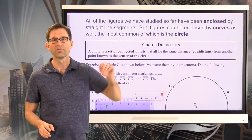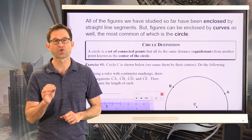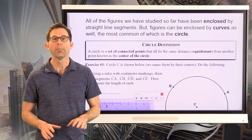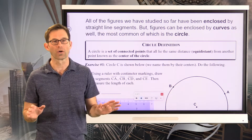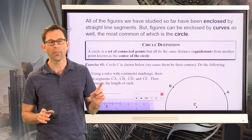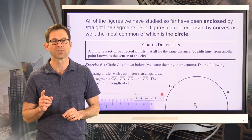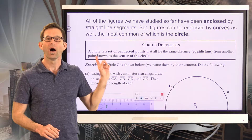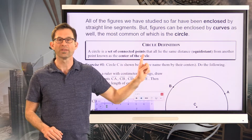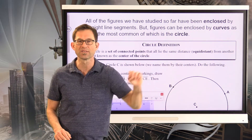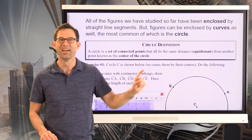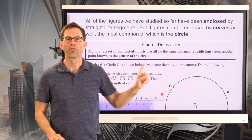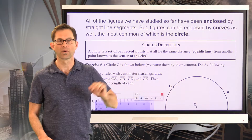Now all the figures that we've studied so far have been enclosed by straight line segments — think about triangles, rectangles, and trapezoids. But figures can be enclosed by curves as well, the most common of which is a circle. So what is the true definition of a circle? A circle is a set of connected points that all lie the same distance — equidistant — from another point known as the center of the circle.